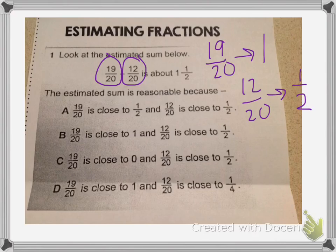Next, I see that the problem says 19 twentieths plus 12 twentieths is about 1 and a half. This is reasonable because 1 plus 1 half equals 1 and a half.